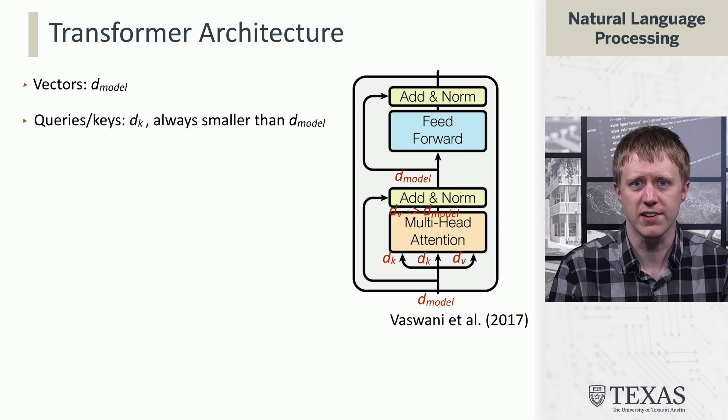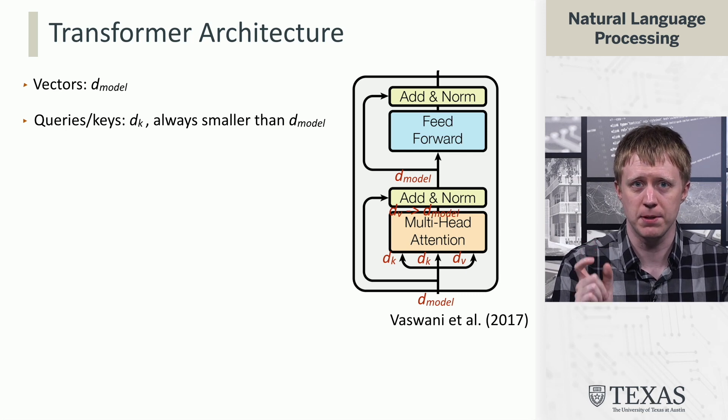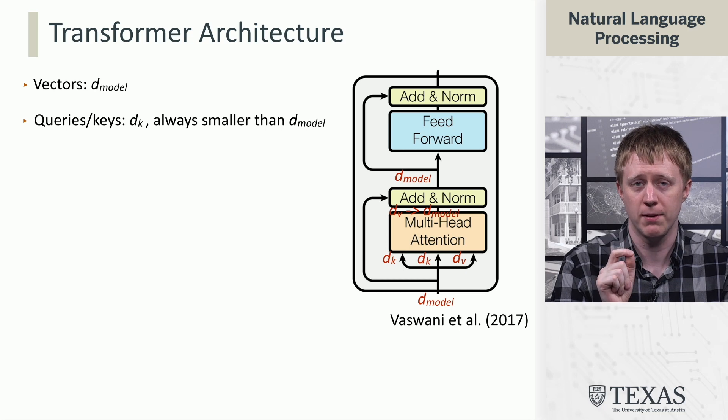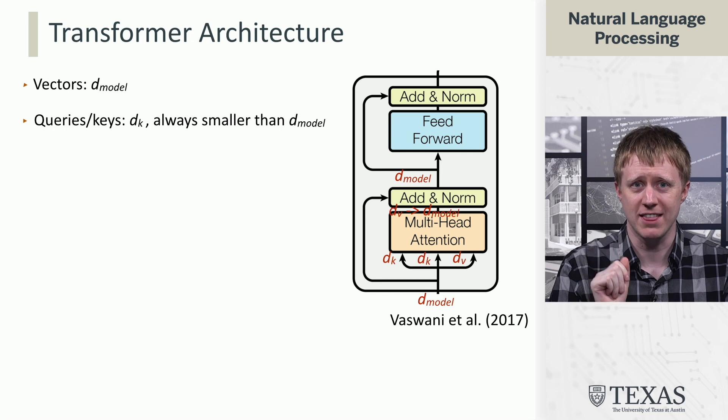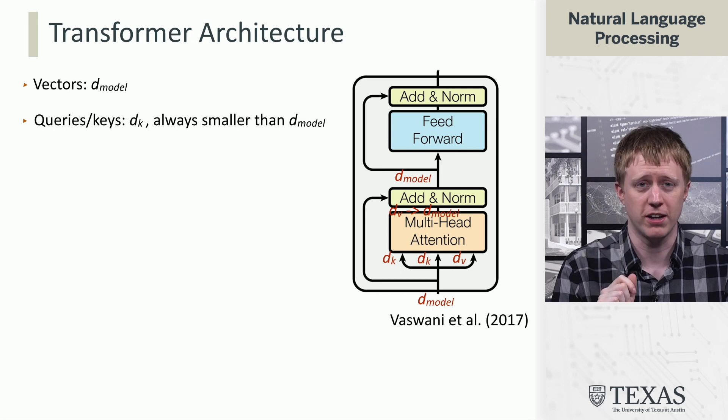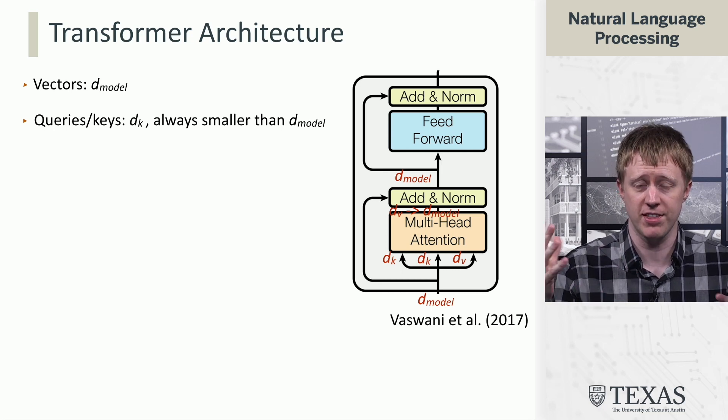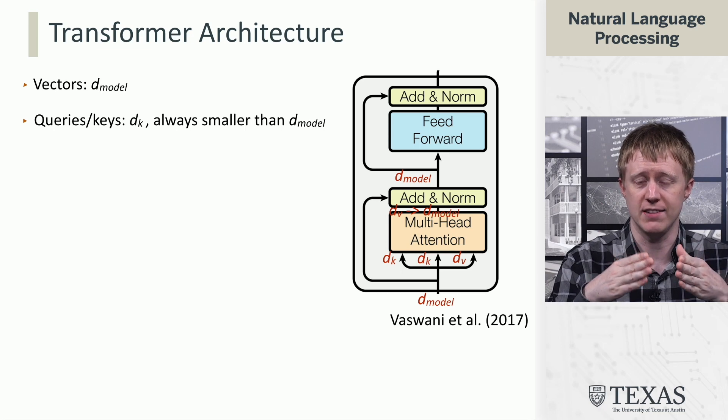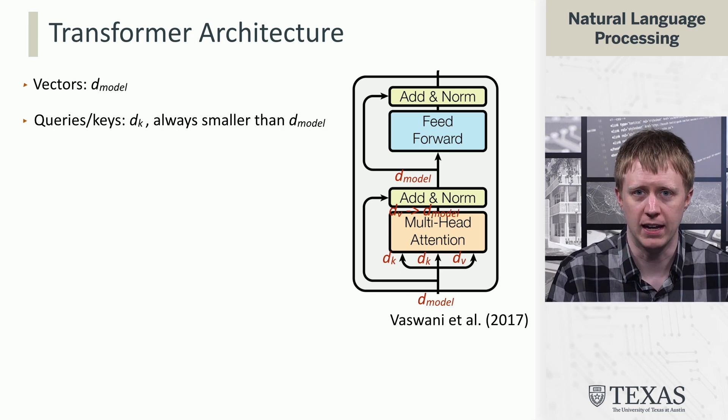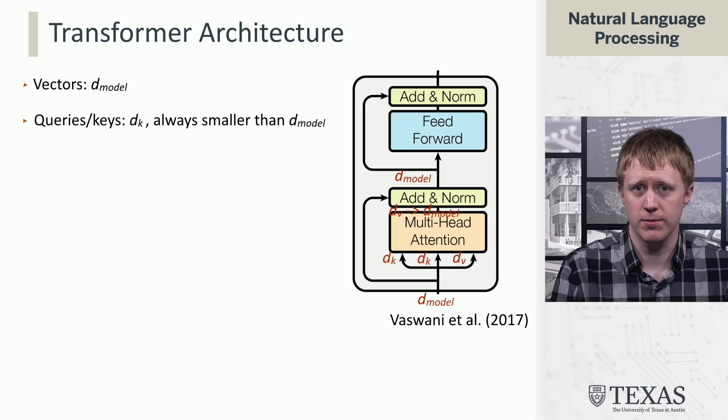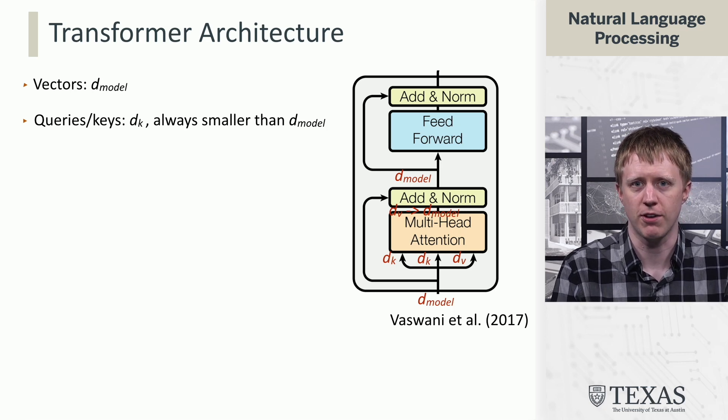Now, the queries and keys, these have to have the same dimension, but remember, we're multiplying them, we're multiplying the inputs by WQ and WK in order to get these. So, WQ and WK don't have to be square. So, we can cast things down to a smaller size DK that we're then going to do our dot products in and do our attention computation with. And these are going to be smaller because it's going to save a lot of computation in order to do things that way.